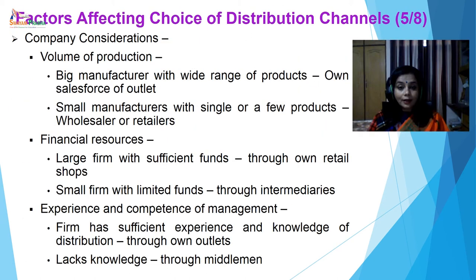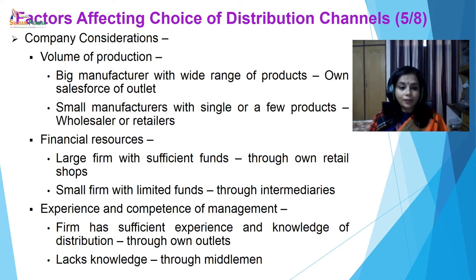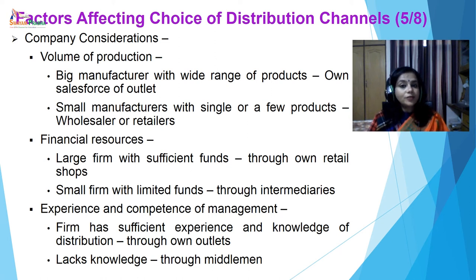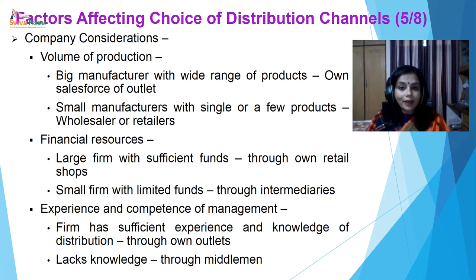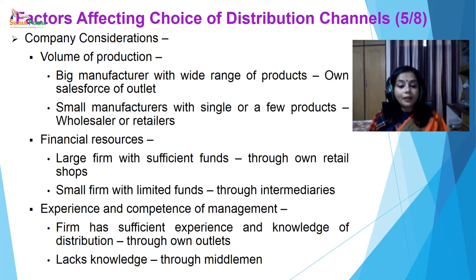The third consideration is company consideration. The company's strength will also decide the channel of distribution. The volume of production: big manufacturers with a wide range of products maintain their own sales force or outlets; small manufacturers with single or few products use wholesalers or retailers. Financial resources: large firms with sufficient funds use their own retail shops; small firms with limited funds will have to depend on middlemen. Experience and competence of the management: firms having sufficient experience and knowledge of distribution can open their own outlets; if they lack knowledge, then through middlemen.